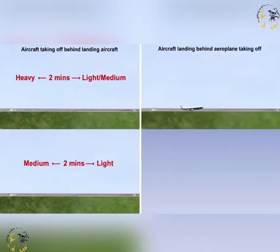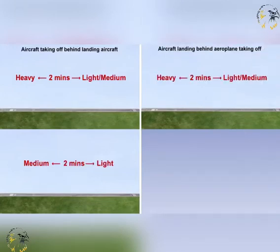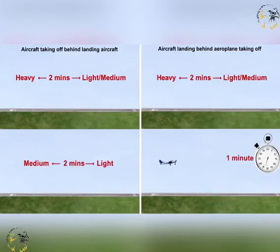For aircraft landing behind another aircraft taking off using displaced thresholds, there is similarly a two-minute minimum separation between a light or medium aircraft landing after a heavy aircraft has taken off and their projected paths cross. This separation also applies to a light aircraft landing after a medium aircraft has taken off.